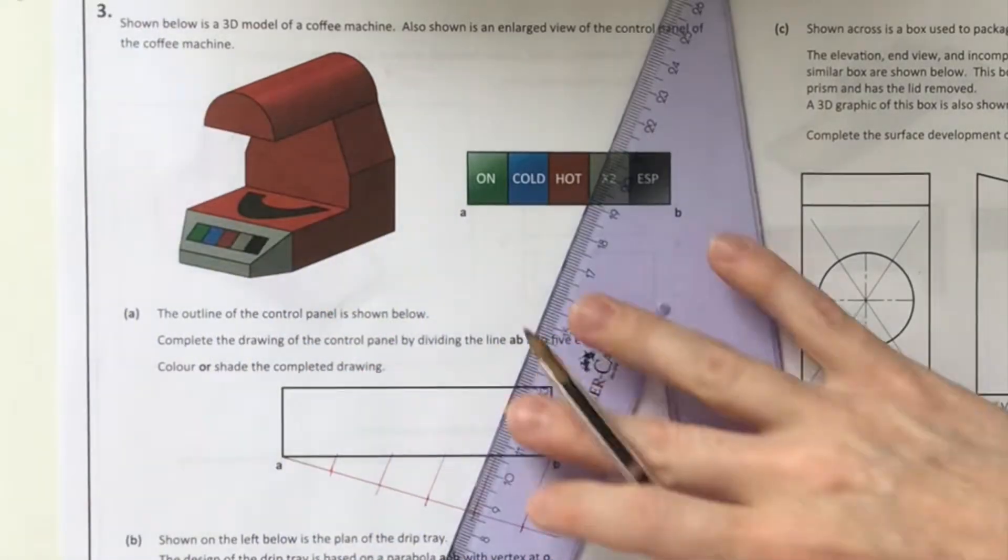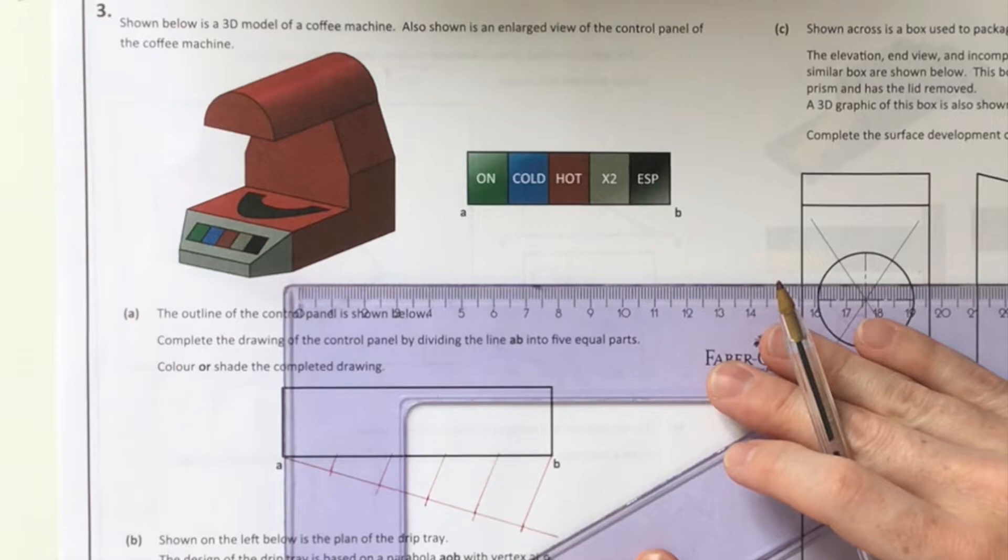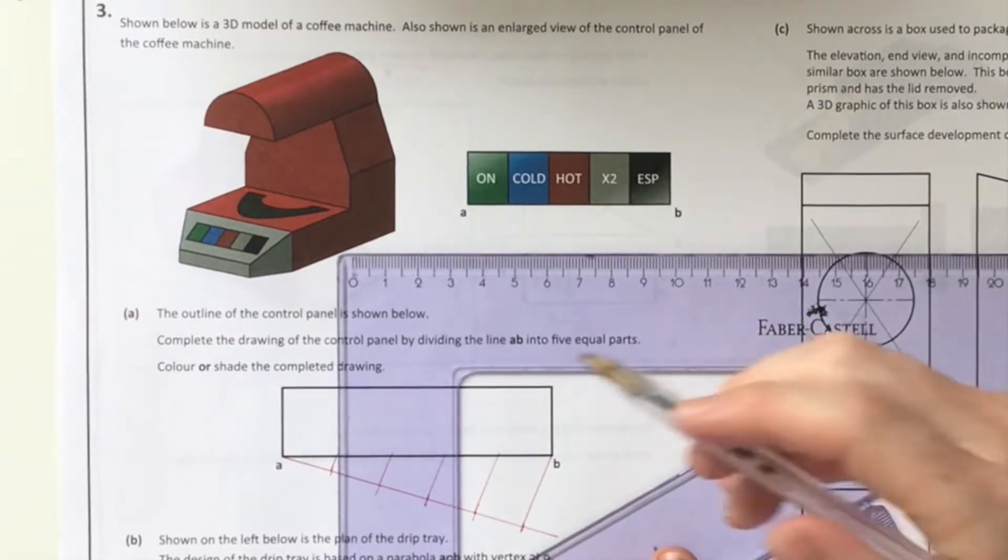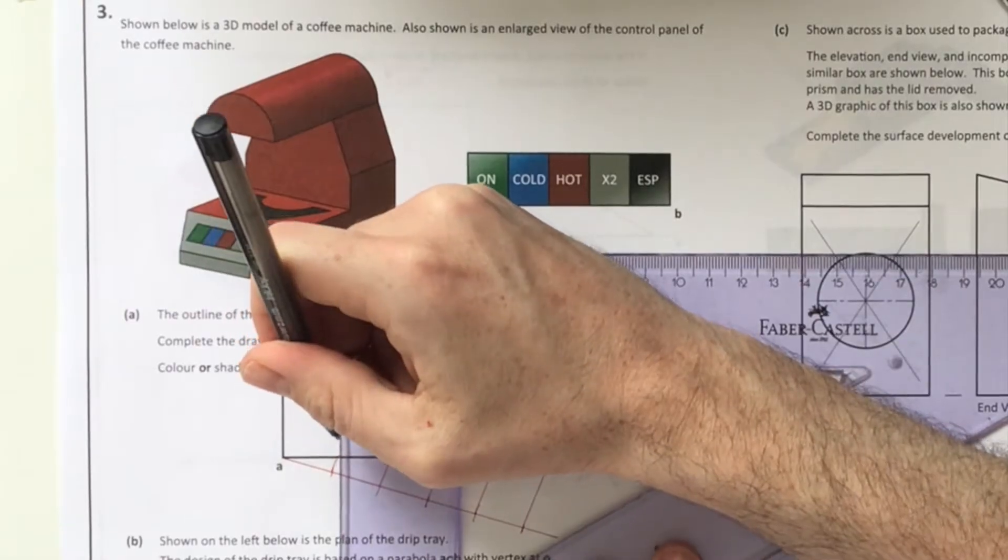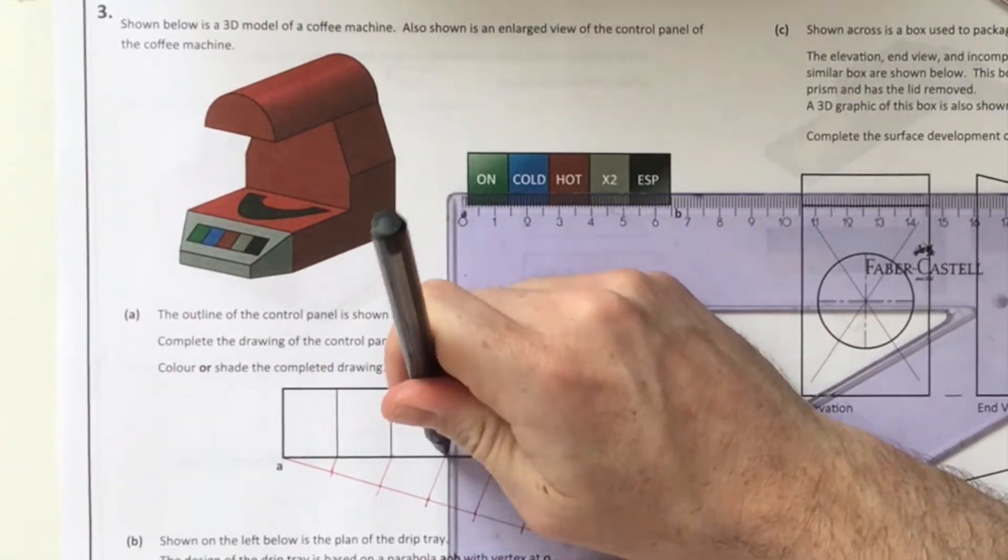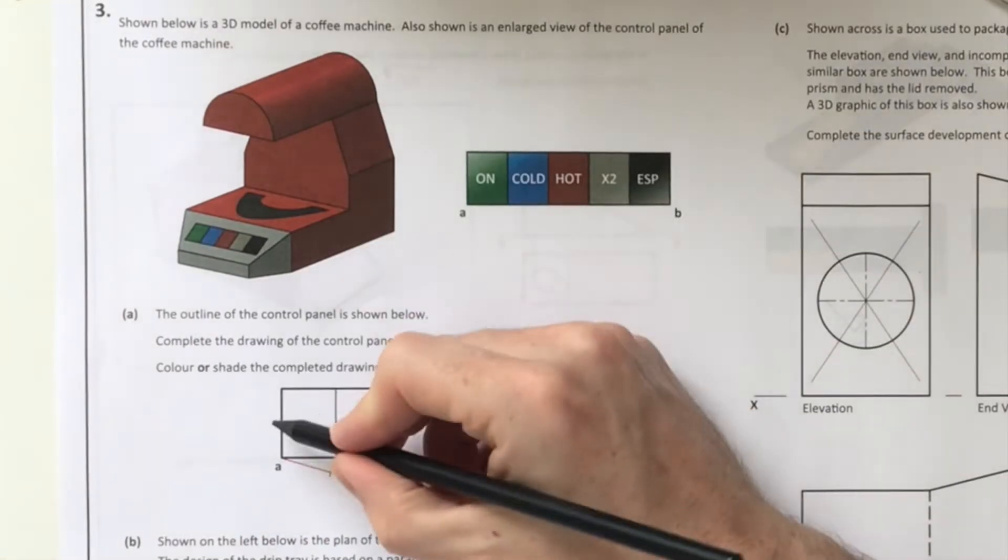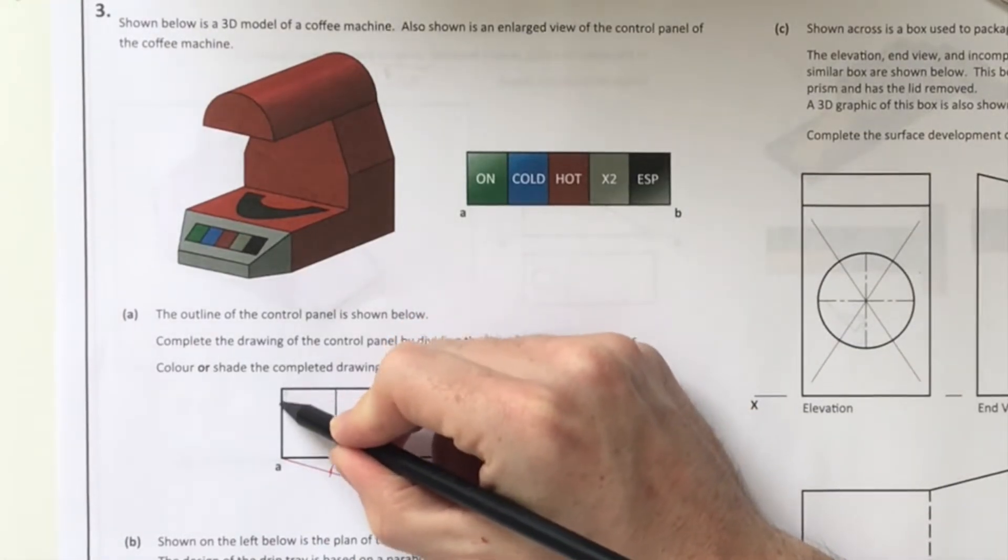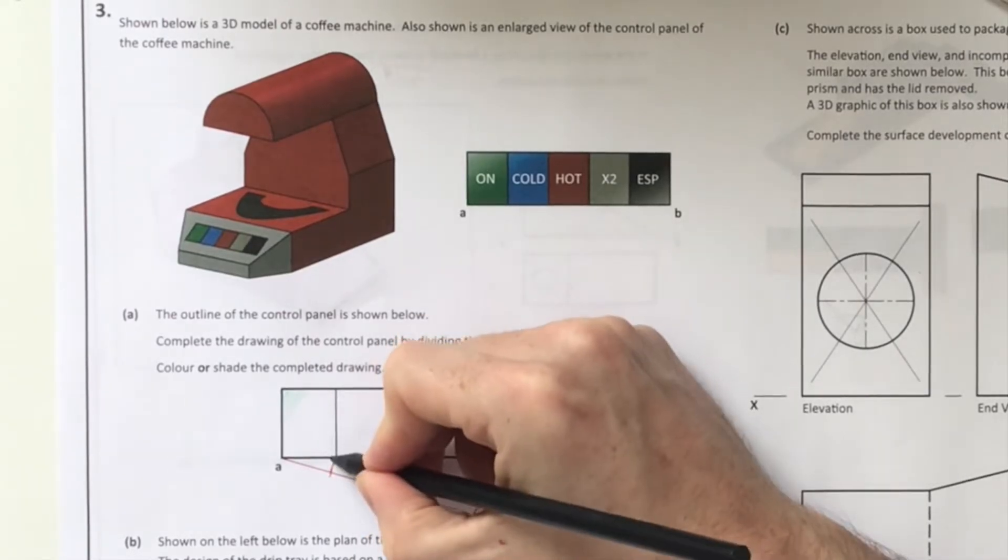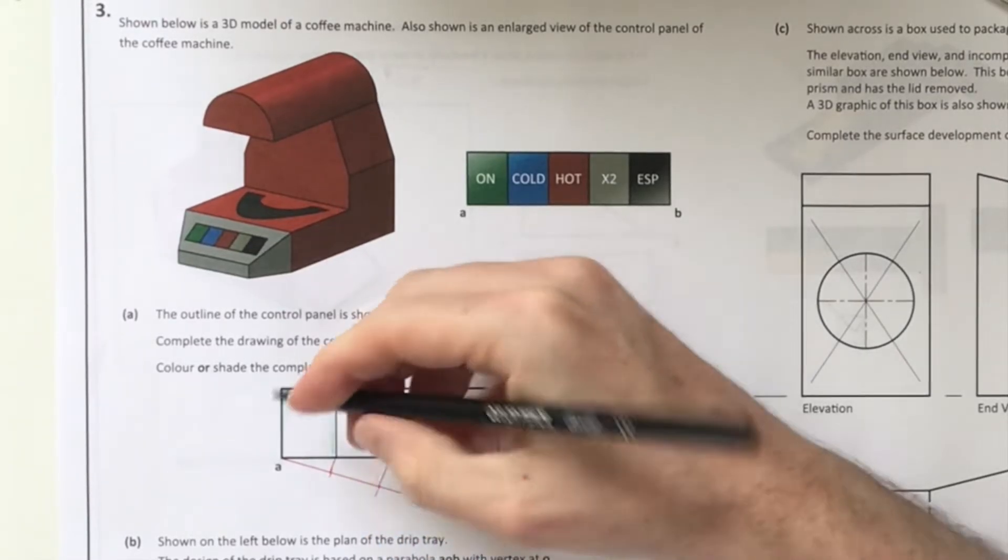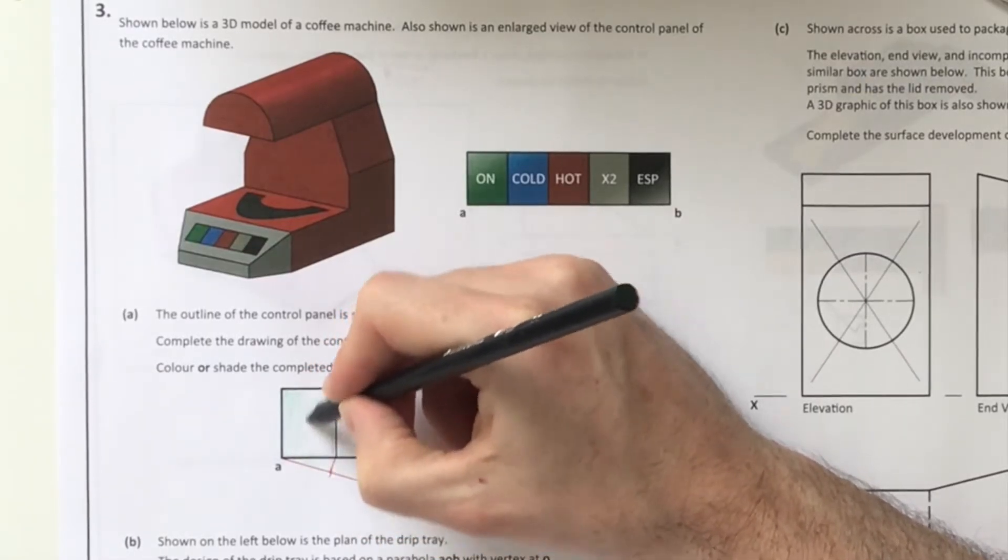All I'm doing is bringing it vertically straight up from each one of those divisions. I'm going to color and shade in each one of these buttons. Unfortunately I haven't got the colors to match the image above, but I'm just going to go ahead and color all these in.